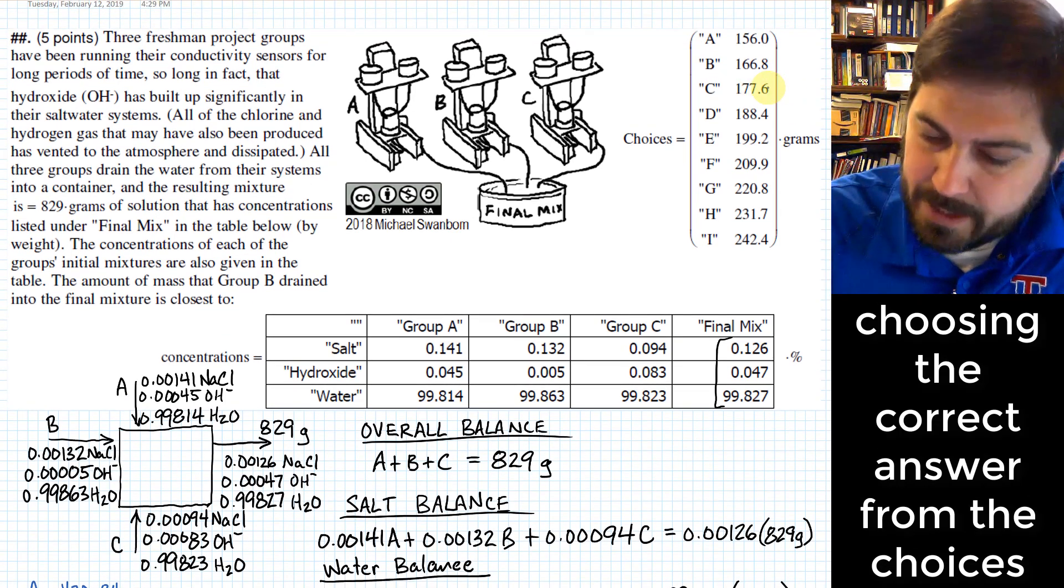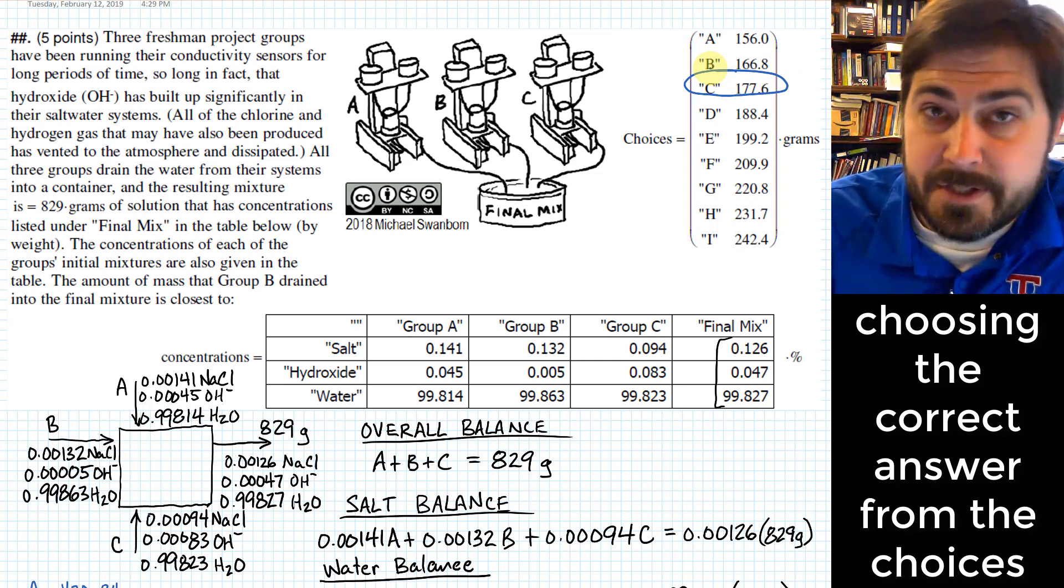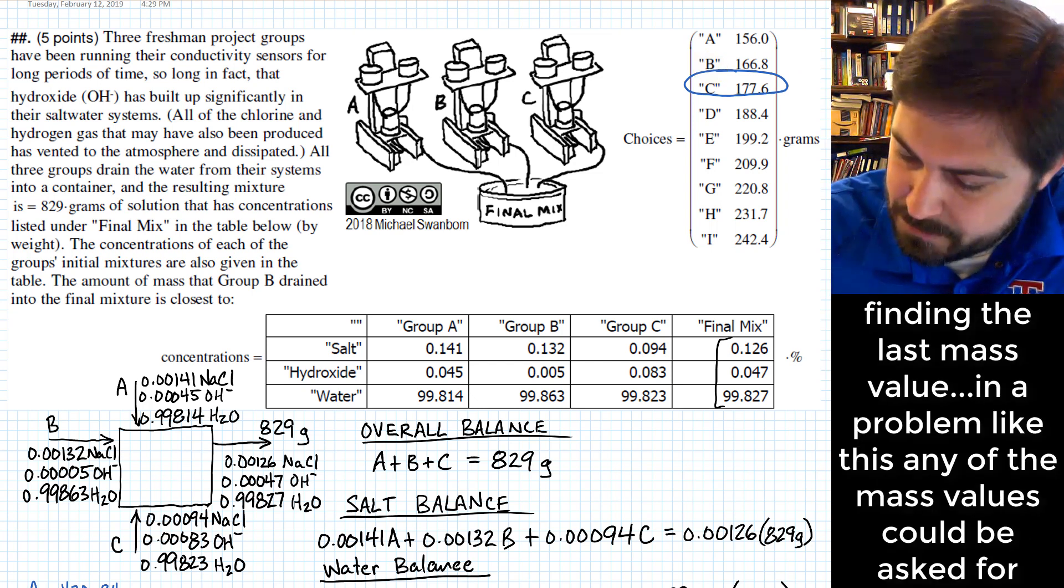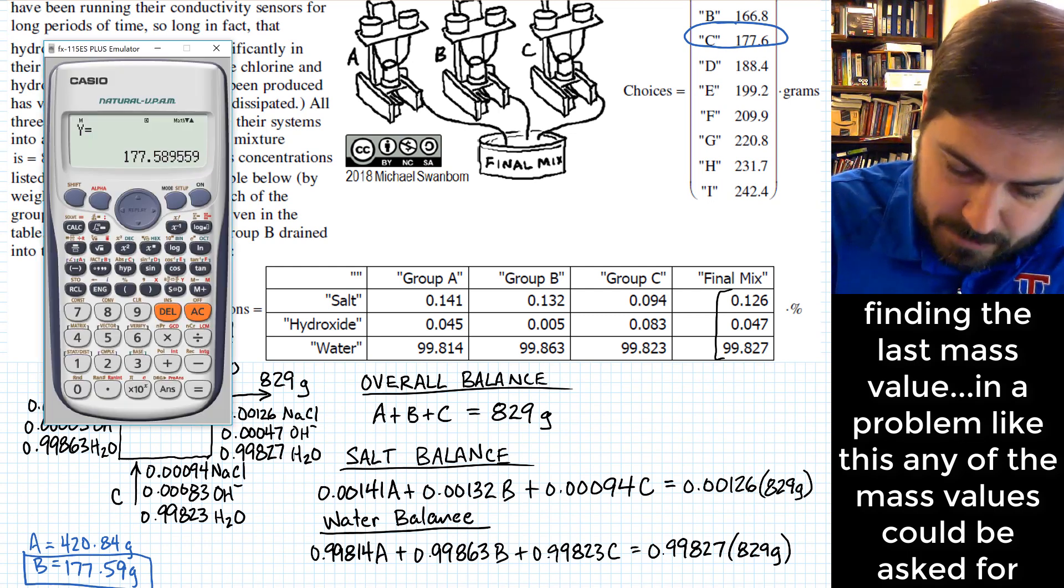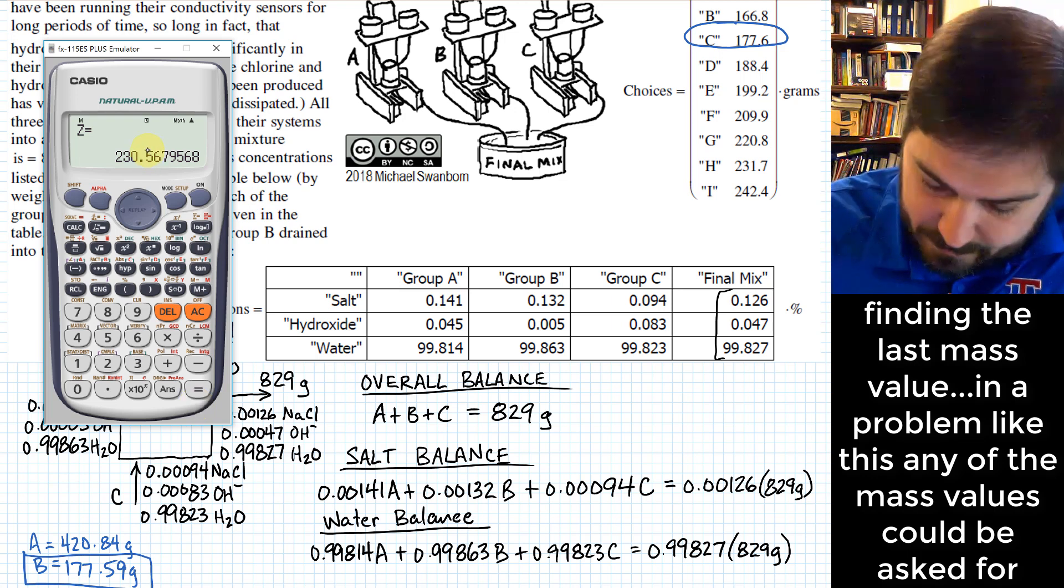It only goes out to that first decimal place, and so it looks like we would want to pick C. In case you're curious, that last term is also something we can find. We just have to hit equals again, and it just is 230.57 grams.